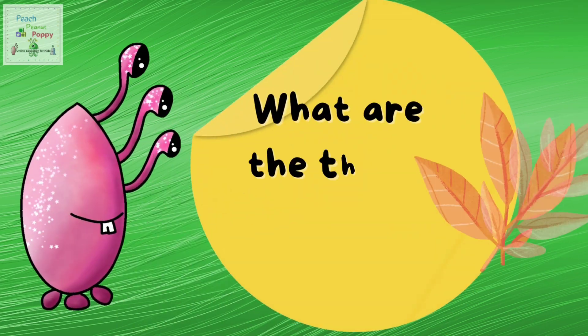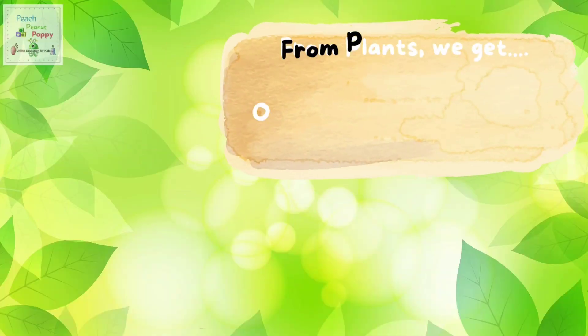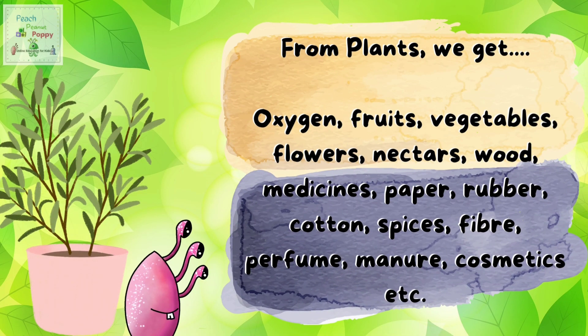Now let's move on and see what are the things we get from plants. The things that we get from plants are: oxygen, fruits, vegetables, flowers, nectars, wood, medicines, paper, rubber, cotton, spices, fiber, perfume, manure, cosmetics, and more. See how long that list was? That proves how important plants are for us and for the environment.